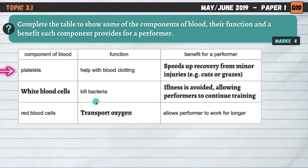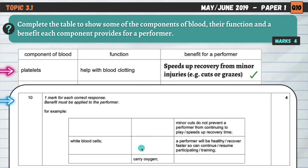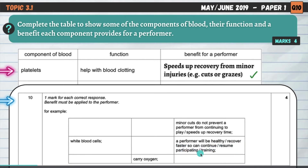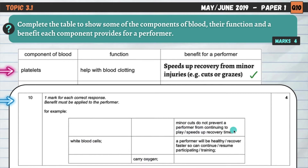White blood cells kill bacteria. That benefits a performer by helping to avoid illness and allowing continued training, not having as many breaks, which would obviously have a negative impact on performance. Looking at the mark scheme: white blood cells — a performer will be healthy, recover faster, and can continue or resume participating or training. For platelets: minor cuts do not prevent a performer from continuing to play. Platelets mean a minor cut isn't going to stop someone from continuing playing or training, but it also helps to speed up recovery time if we suffer one of those injuries.